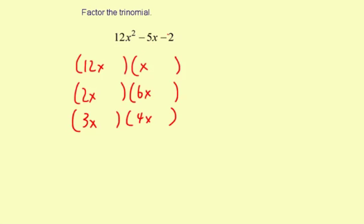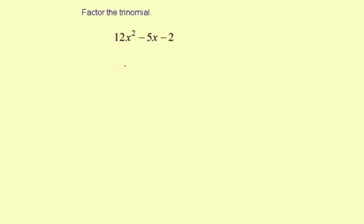Now you could go through and guess and check with the factors of negative 2 and all these different possibilities, but there's actually a system you can use that makes it a lot easier. The system is called factor by grouping. You multiply the first and the last term coefficients. So 12 times negative 2, that makes negative 24.